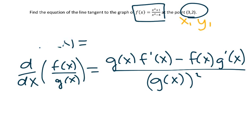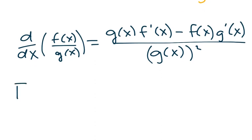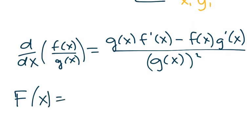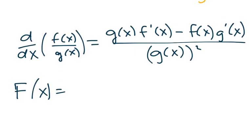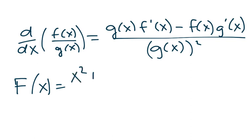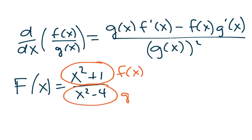And so what we're going to do is we're going to find the derivative of this function f. I'm going to call it big F, just so that we don't get confused here. So I'm going to say big F of x is equal to x squared plus 1 over x squared minus 4. And so if I'm going to apply this quotient rule, this is kind of like my f of x, and then this is my g of x.